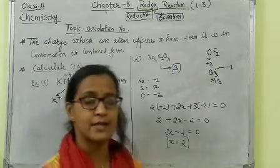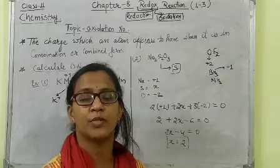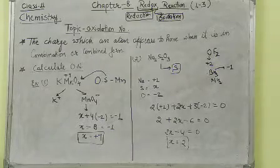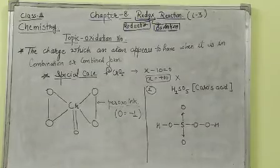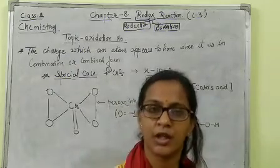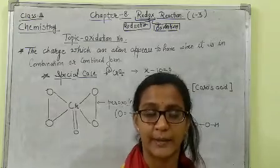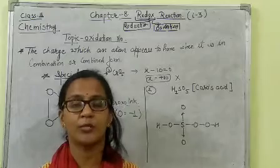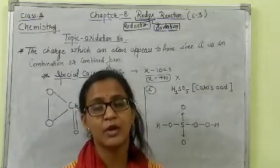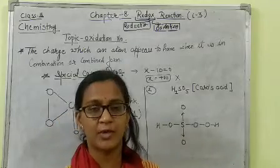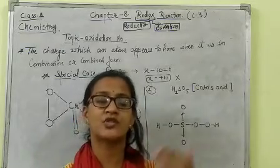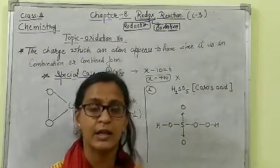There is another method for certain compounds where we need to use the structure to find the oxidation number. There are some special cases in oxidation number that we must know. For example, oxygen is generally in minus 2 state, but in compounds with a peroxide bond — where an oxygen-oxygen linkage is present — oxygen exists in a minus 1 state.